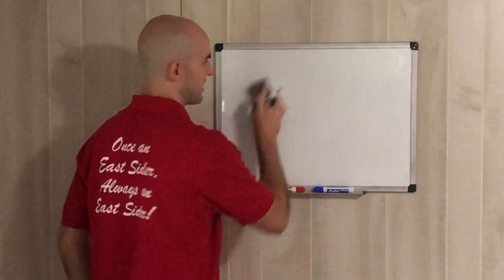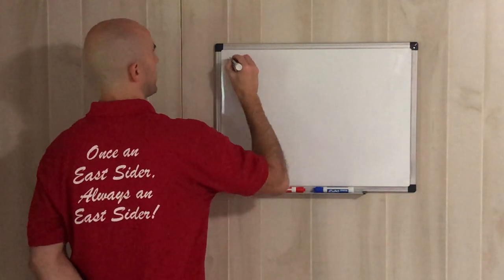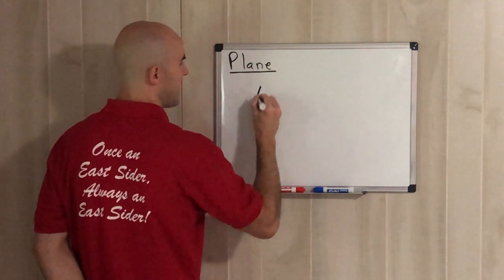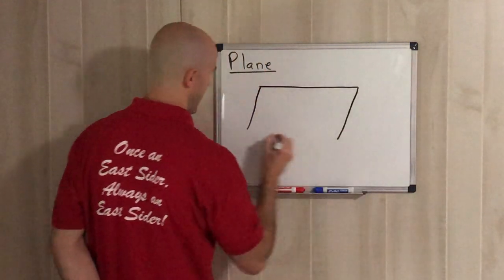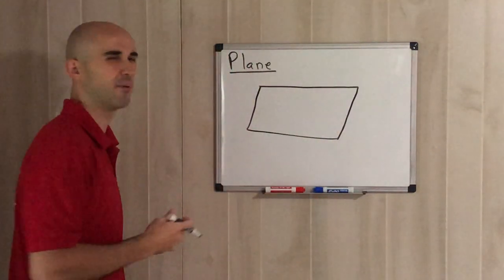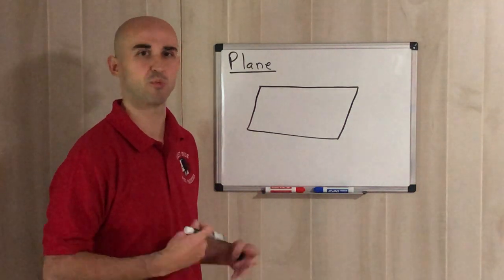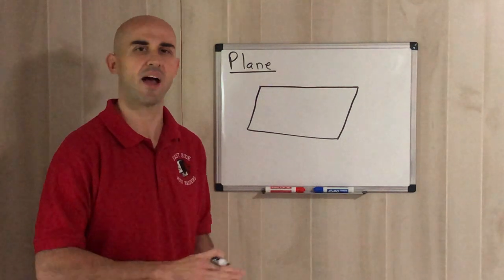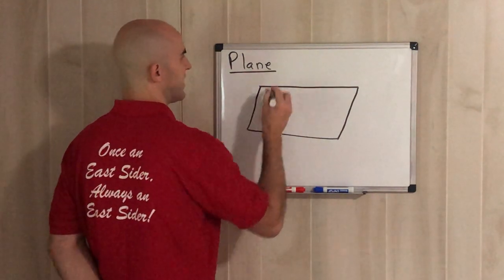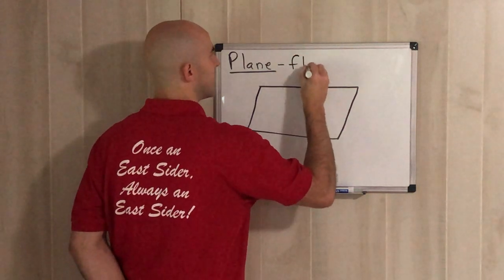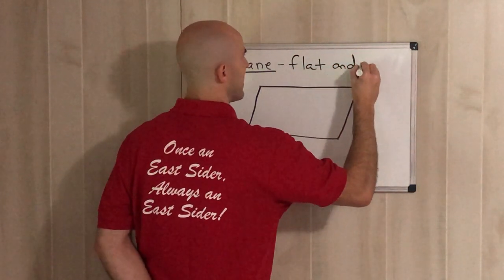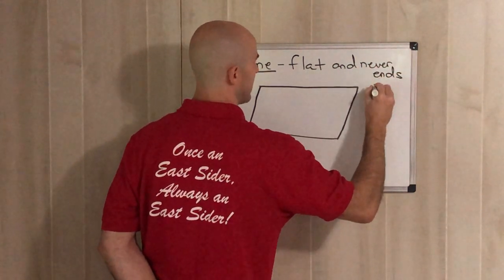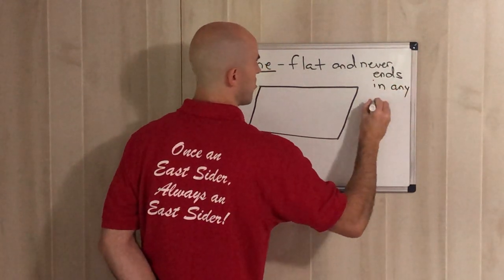There are three other things to cover. We have something called a plane. A plane is just any flat surface — two-dimensional. It doesn't have to look any particular way. That flat surface is where you have a bunch of points, lines, rays, and segments. A plane is something that's flat and never ends in any direction — it just goes on forever.